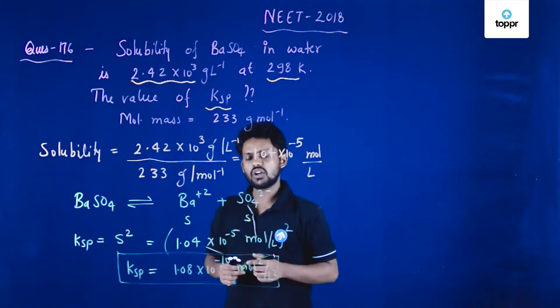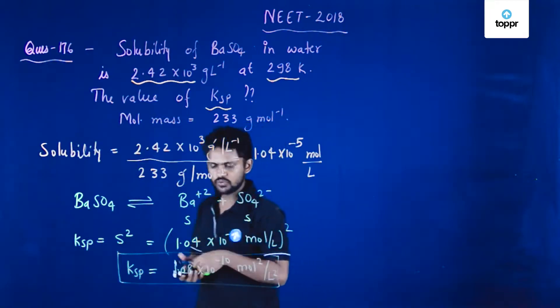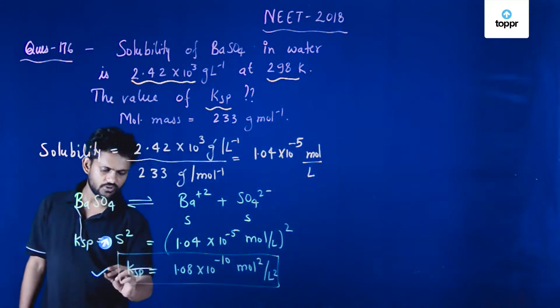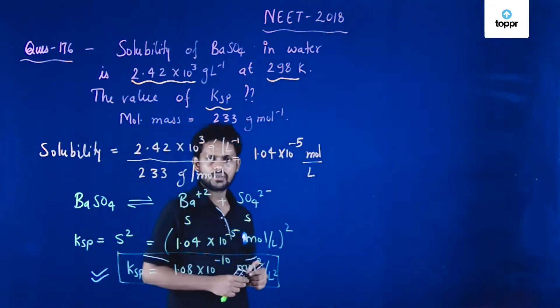You can find it in one of the options. I believe option number 2 is 1.08 × 10^-10 mole squared per liter squared.